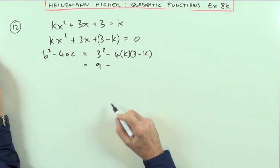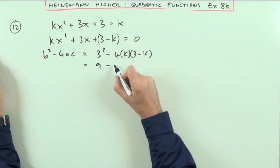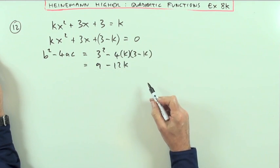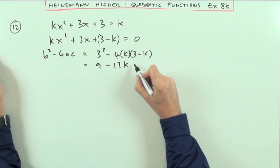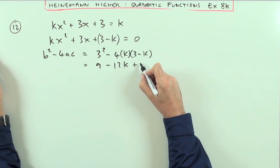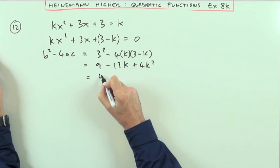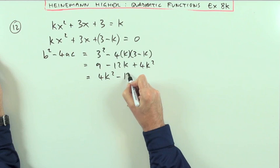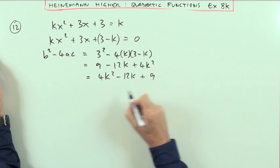So I've got 9 minus the same at the end times a negative k, so plus 4k squared. Just rewrite that: 4k squared minus 12k plus 9.